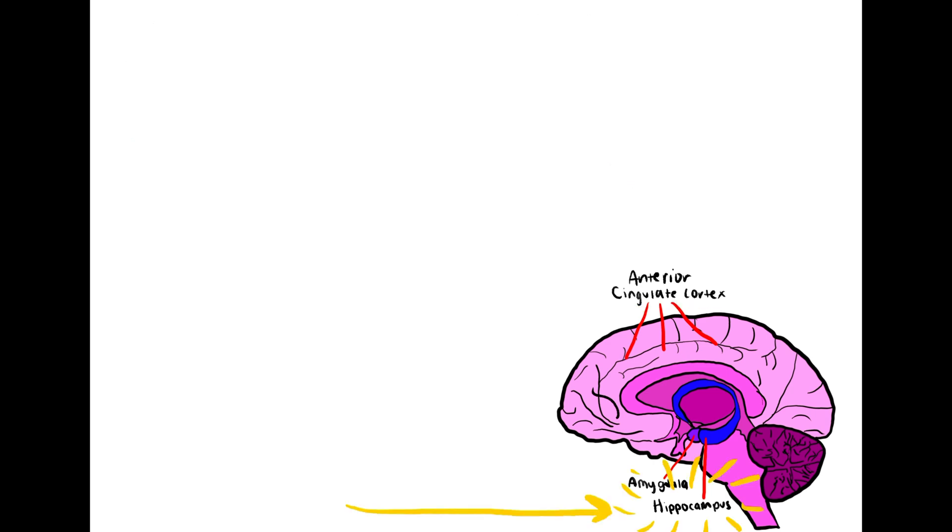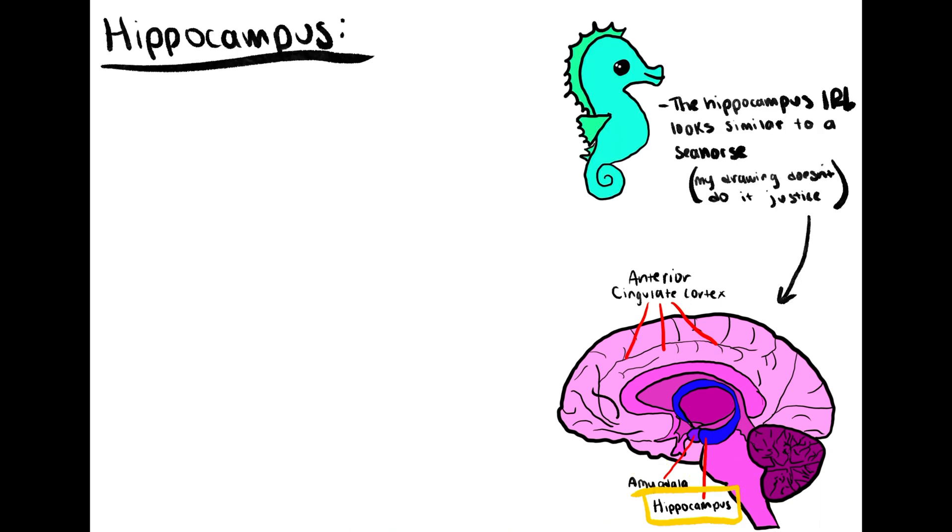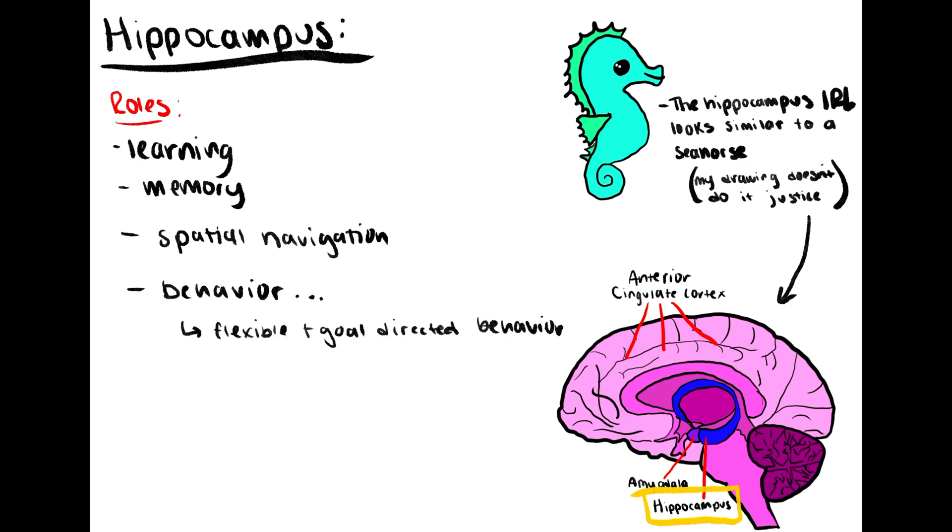Closing out the social brain regions in the limbic system is the hippocampus. Our little seahorse-shaped friend is best known for its role in learning and memory. In addition to learning and memory, the hippocampus also has a role in spatial navigation and behavior. More specifically, the hippocampus is involved in flexible and goal-directed behavior and behavioral inhibition.